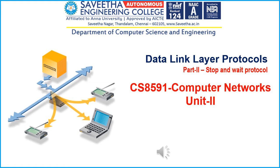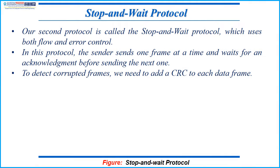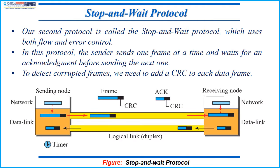Hello students. In this video we will be seeing data link layer protocols, a topic from unit 2. Our second protocol is called stop and wait protocol, which uses both flow and error control. In this protocol a sender sends one frame at a time and waits for an acknowledgement before sending the next one. To detect corrupted frames we need to add a CRC, that is cyclic redundancy check, to each data frame.